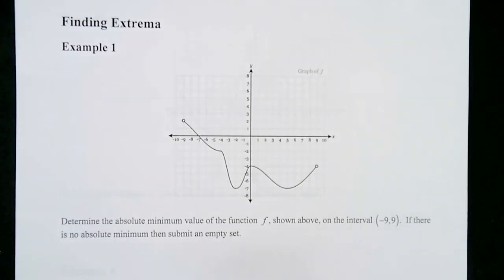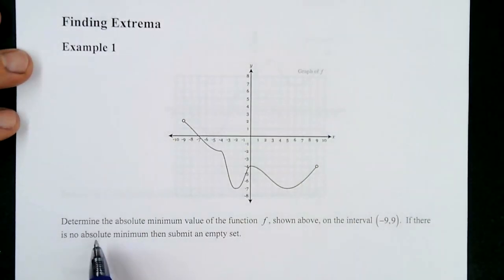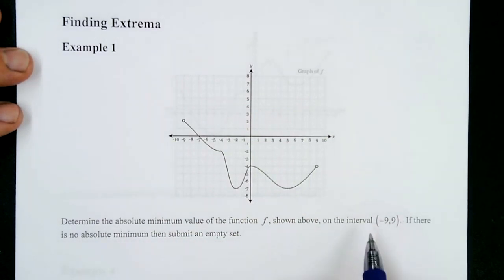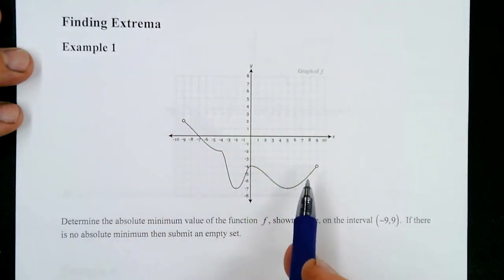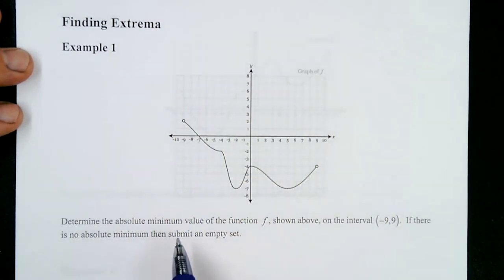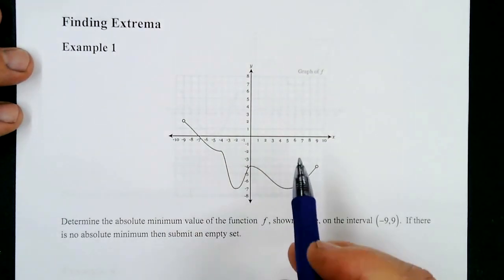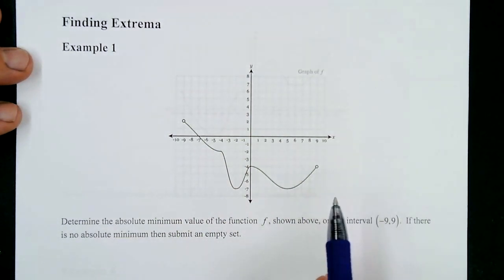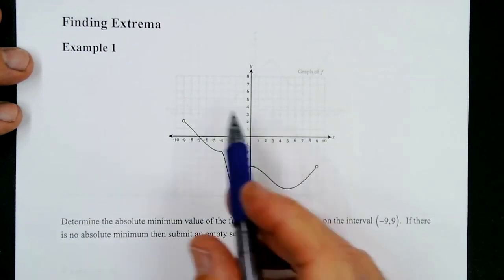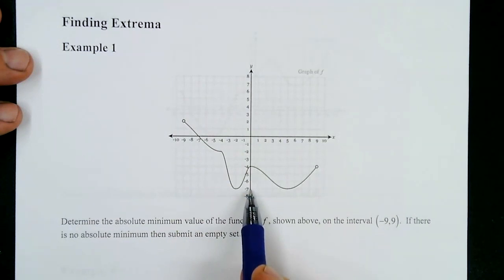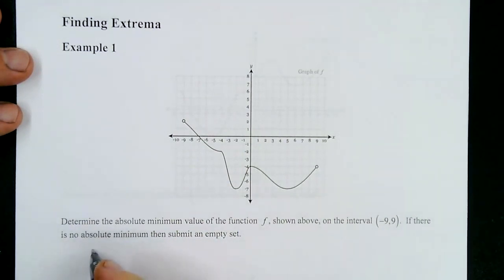Let's jump in. The first example: determine the absolute minimum value of the function f shown above on the interval negative nine to nine. It's an open interval, so we're not including the endpoints. If there is no absolute minimum, submit an empty set. Your problem set is going to come from Delta Math today. The absolute minimum is the lowest y-value overall on this entire graph, and it's going to happen right here — the absolute minimum value is negative seven.